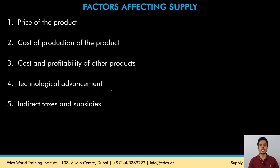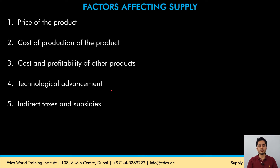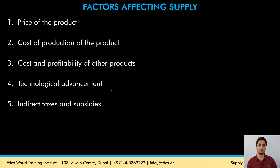Indirect taxes and subsidies also affect supply. Indirect taxes are taxes the government charges on the product, directly increasing the cost of production. Subsidies are amounts the supplier receives from the government for fulfilling certain production conditions, and they reduce the cost of production. An increase in indirect tax or a decrease in subsidy will reduce profits and lead to a fall in supply. A fall in indirect tax or an increase in subsidies will reduce cost, raise profits, and lead to an increase in supply.